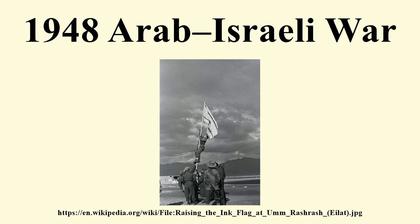On 29 November 1947, the United Nations General Assembly adopted a resolution recommending the adoption and implementation of a plan to partition the British-mandated Palestine into two states, one Arab and one Jewish, and the city of Jerusalem. The General Assembly resolution on partition was greeted with overwhelming joy in Jewish communities and widespread outrage in the Arab world. In Palestine, violence erupted almost immediately, feeding into a spiral of reprisals and counter-reprisals. The British refrained from intervening as tensions boiled over into a low-level conflict that quickly escalated into a full-scale civil war.